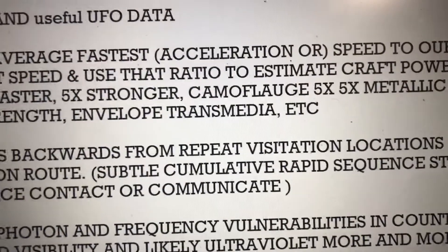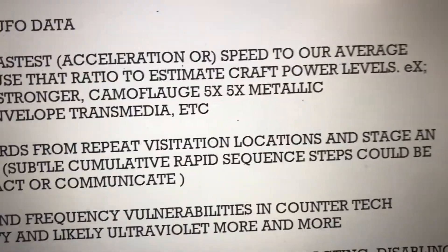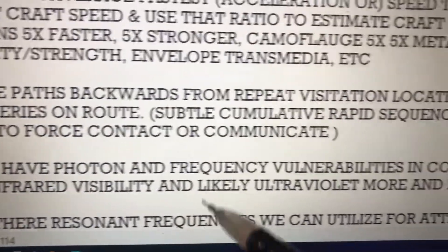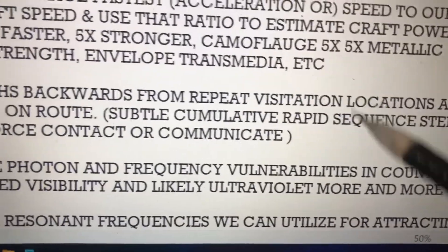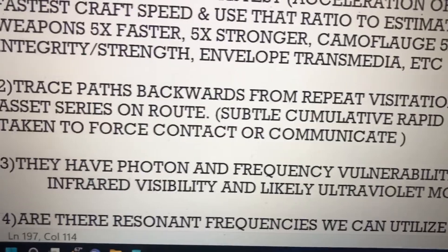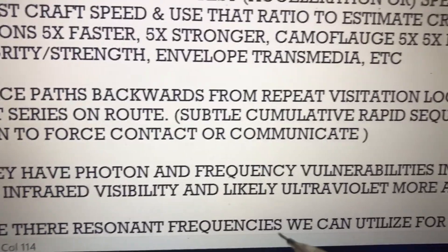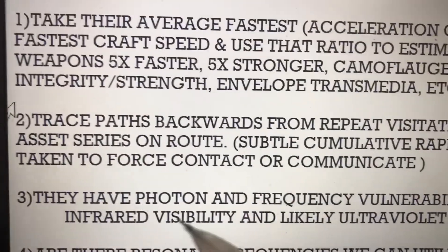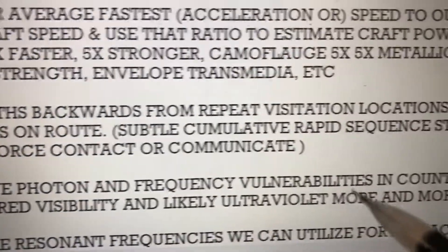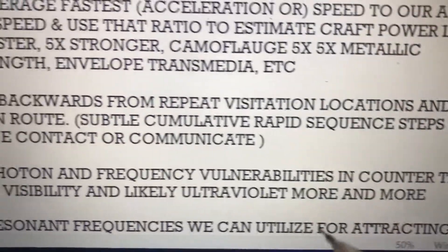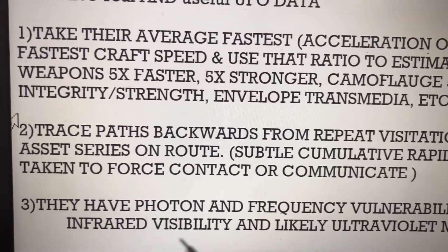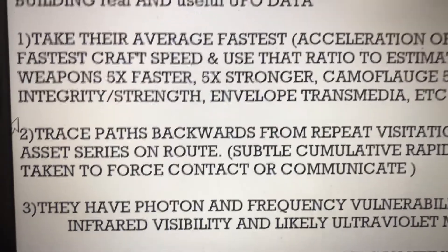They have photon and frequency vulnerabilities in their counter technology. If we look at infrared, invisible crafts become visible. There's a belief that they bend the light a certain way, and maybe infrared allows us to peer through that. The material itself may be acting as a waveguide for a certain frequency. These areas of vulnerability could be explored, utilized, and maximized — not just photon, but also frequency vulnerabilities.